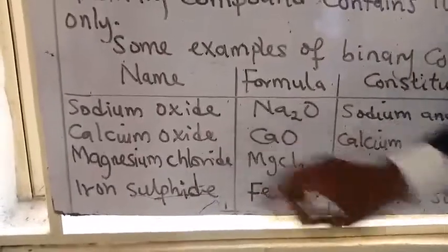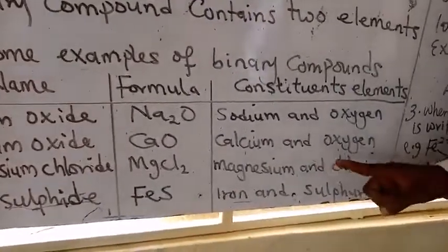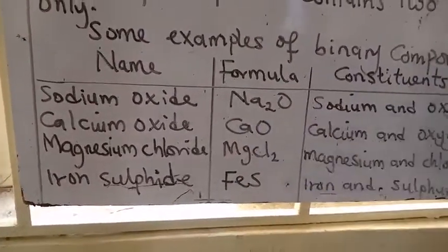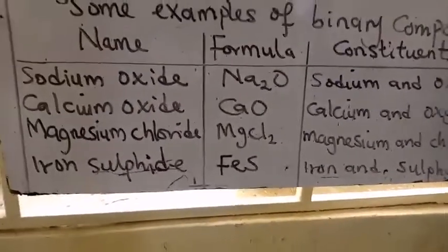We have calcium oxide. This is the formula. And it's made up of calcium and oxygen. We have magnesium chloride. And this is the formula. And these are the constituent elements. And then we have iodine sulfide and so on.